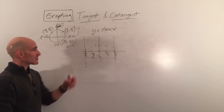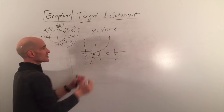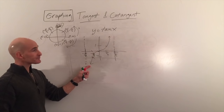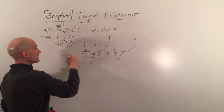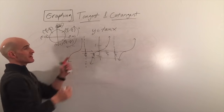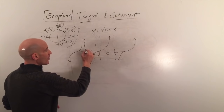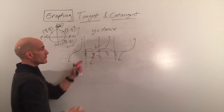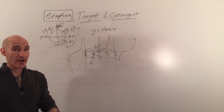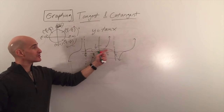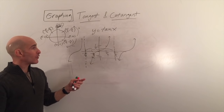The tangent graph gets closer and closer to the asymptotes and repeats with a period of pi. For sine and cosine the period is 2 pi, but for tangent and cotangent one complete cycle spans pi.